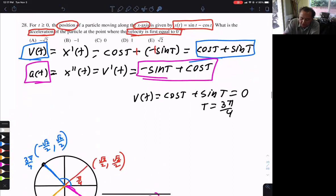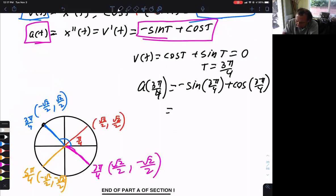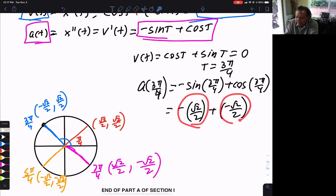They want to know the acceleration at this time. So they want a at three pi over four. Well, I'm going to plug three pi over four here and here. So we have minus sine of three pi over four plus cosine of three pi over four. You need to know your unit circle. That's going to be radical two over two. And cosine of three pi over four is going to be negative radical two over two. So I have negative one of those, negative one of those. I owe two of those.